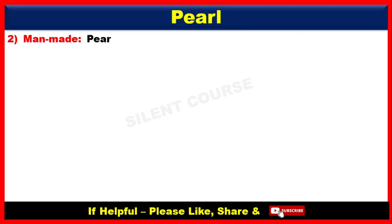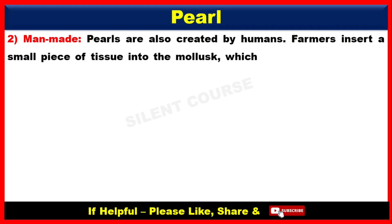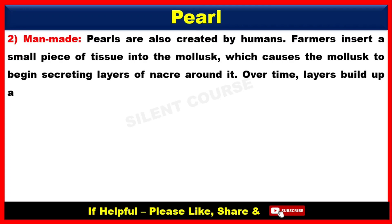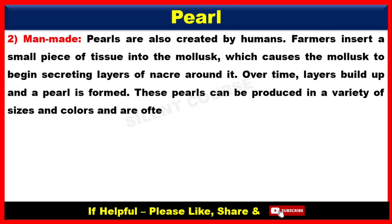Number 2, Man-made. Pearls are also created by humans. Farmers insert a small piece of tissue into the mollusk, which causes the mollusk to bring secreting layers of necree around it. Over time, layers build up, and a pearl is formed. These pearls can be produced in a variety of sizes and colors, and are often less expensive than natural pearls.